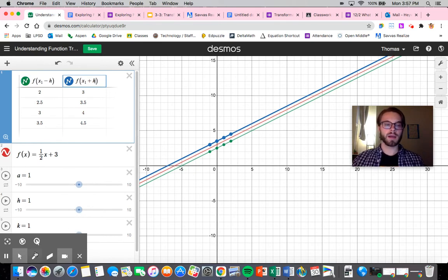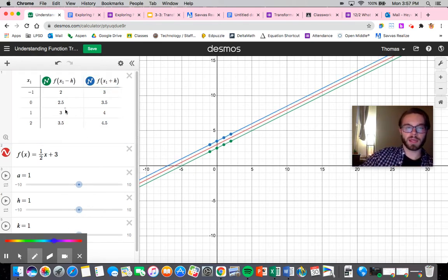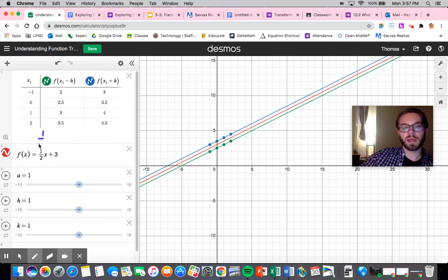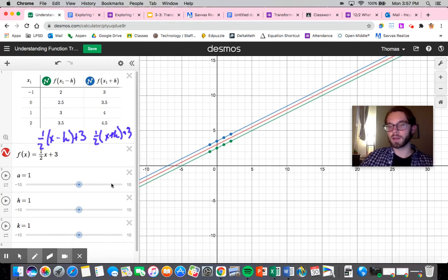But if I were to actually plug these in, let's look at what is happening. So if I plug in the x minus h, I have one half times x minus h plus three. And on this one, I would have one half x plus h plus three. So the only thing that's changing here is we're essentially adjusting my x value.